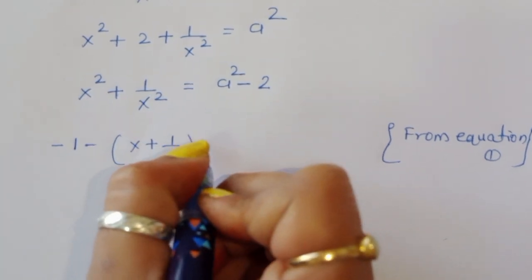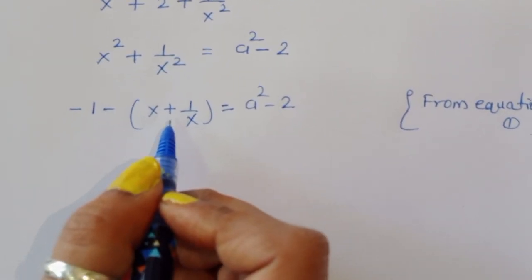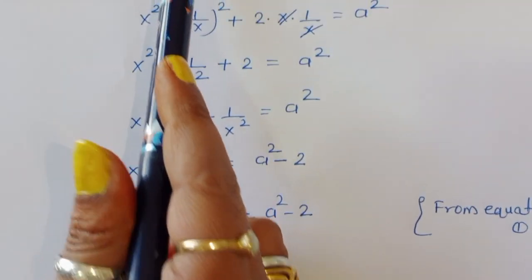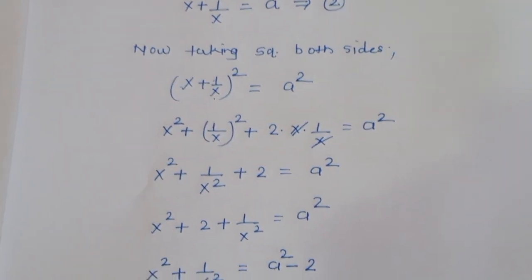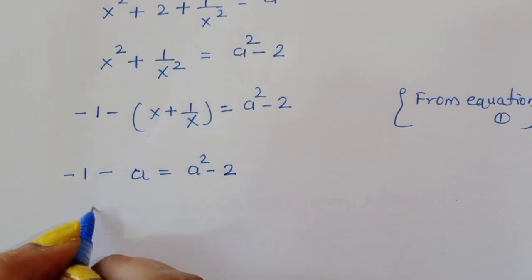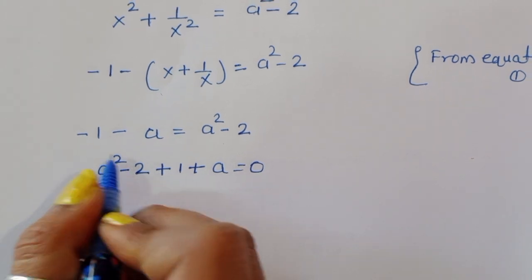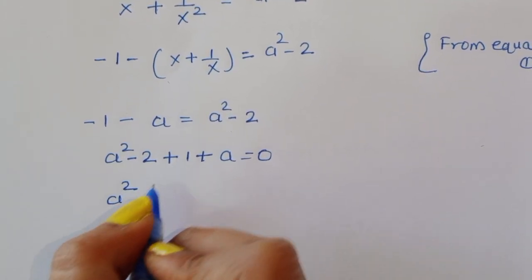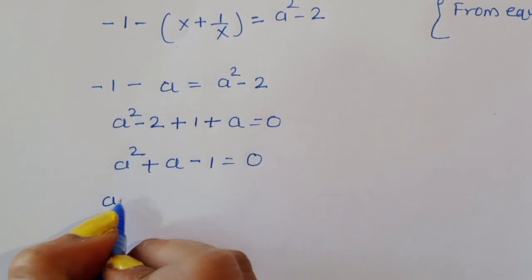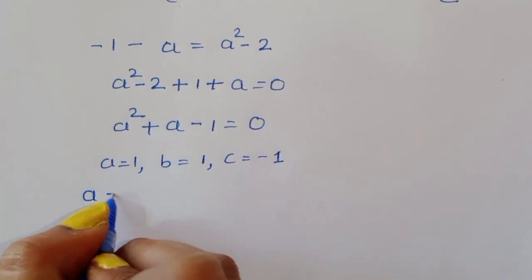Substituting back: (a^2 - 2) + a + 1 = 0, so a^2 + a - 1 = 0. Here the coefficients are: a = 1, b = 1, c = -1.